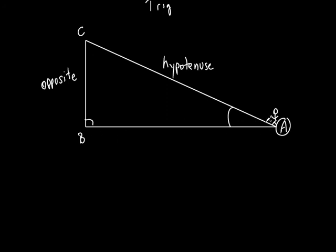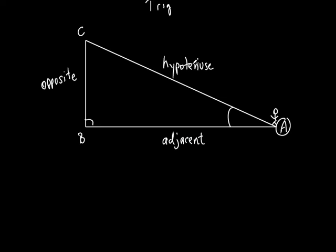What about this side right here to angle A? One of the sides of this angle is part of it — it's connected, it's next to it. What's a better word? Adjacent. Do you remember that word from earlier in the year? It's adjacent — it's next to it. Some people say, 'yeah, but the hypotenuse is next to it too.' Well, the hypotenuse is more important — it's got its own name. It's always the hypotenuse because it's opposite the right angle. So we call this the adjacent leg and the opposite leg, because the hypotenuse is not a leg.